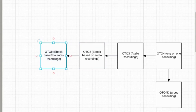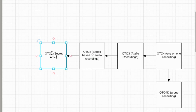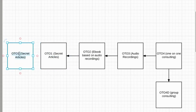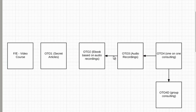Moving further back, OTO one could be something like secret articles — a piece of the ebook. Then we have the front-end offer, which could be a video course. After you have finished building it out backwards, you want to switch the arrows back to the forward direction, showing the customer progression from lead magnet through to the highest one-time offer.